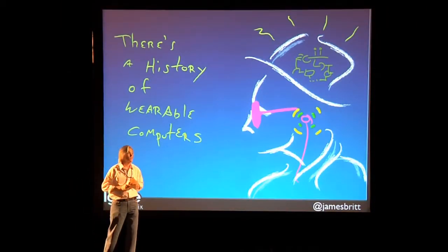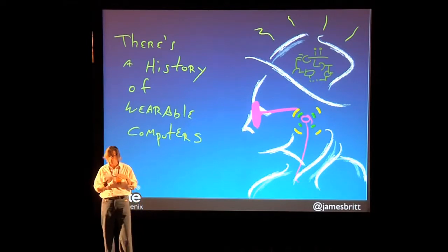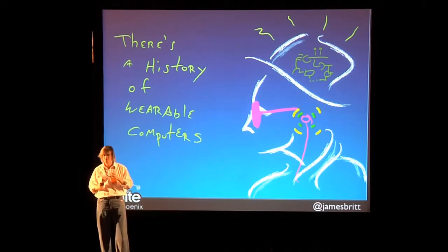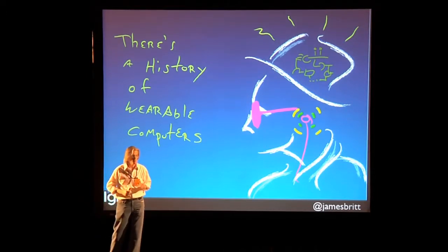In 1966, Ed Thorpe and Claude Shannon built a wearable computer about the size of a pack of cigarettes that let them calculate the odds for a roulette wheel. This is some serious science. This is chips for chips.